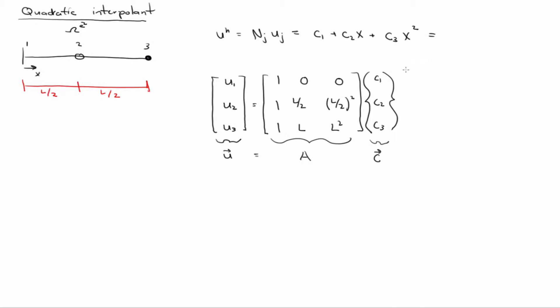So does everybody see that? If I let the vector x transpose equal to 1, x, x squared, then I can write this equation as x transpose c, right?